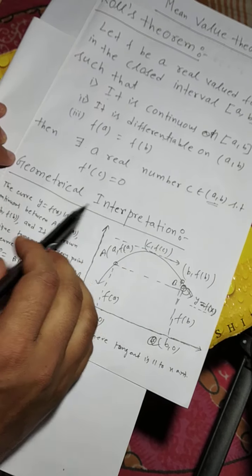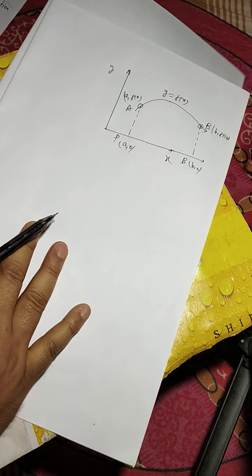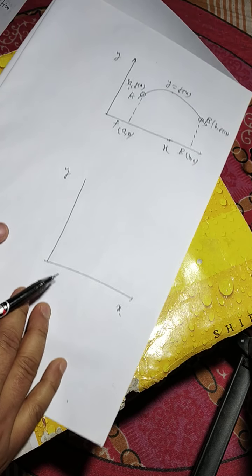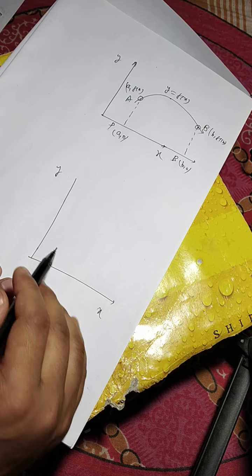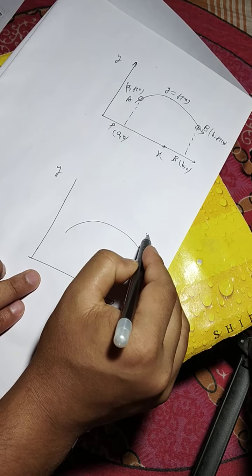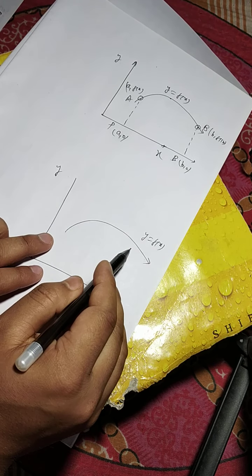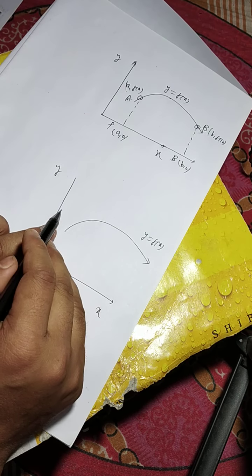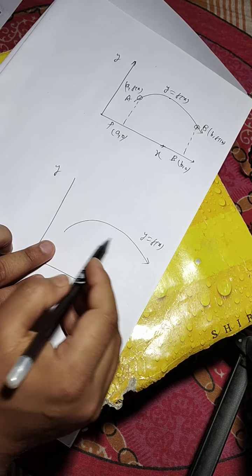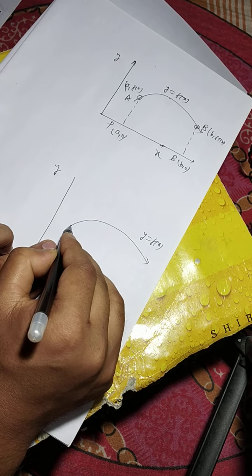Now the geometrical significance of Rolle's theorem. Here this is the x-axis and this is the y-axis. Let f be a real valued function on the closed interval [a, b]. We can take a curve y equals f(x). The first condition is that it is continuous — that means the curve goes from one point to another without any break, and such a curve is called a continuous curve. So y equals f(x) is continuous on the closed interval [a, b].